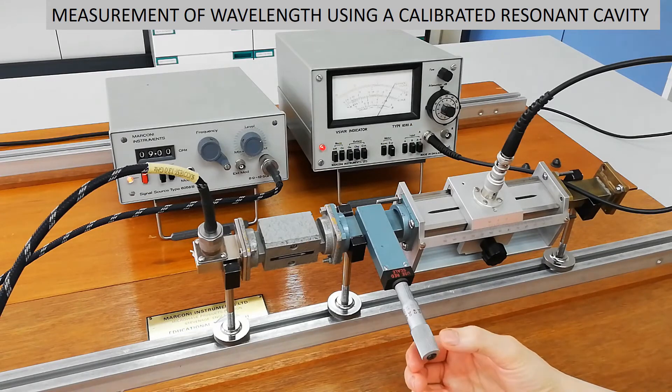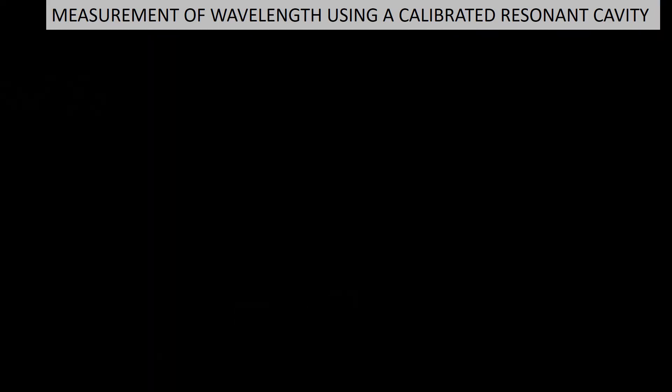Now, we move the probe looking for a maximum position, and then we keep the probe there. And we start to introduce the micrometer of the resonant cavity until we observe an attenuation on the voltage standing wave ratio meter. We note the reading of the calibrated resonant cavity that using the red scale is equal to the guide wavelength value.